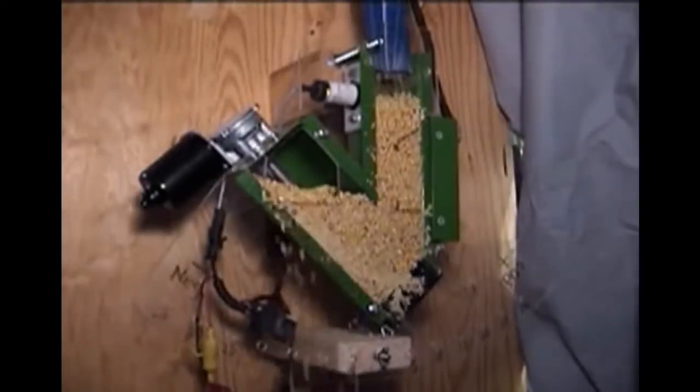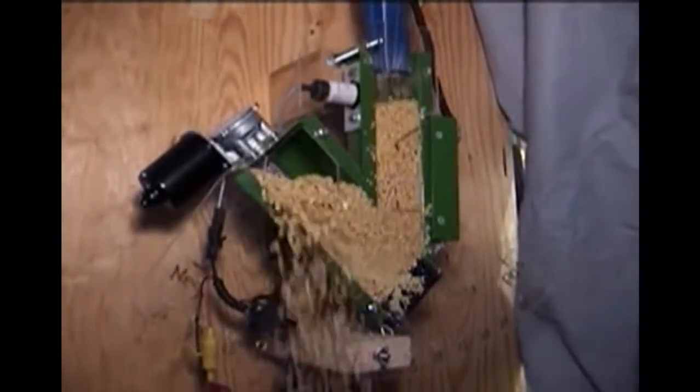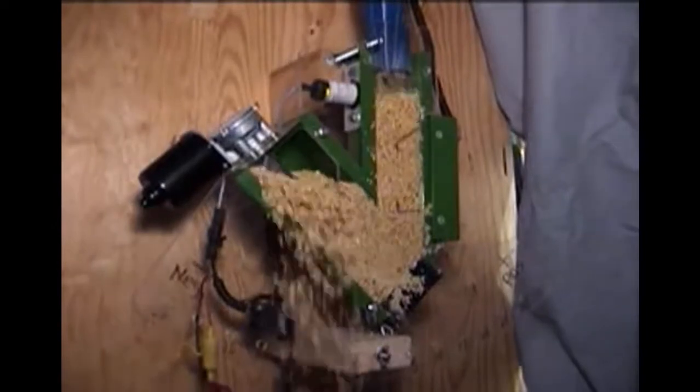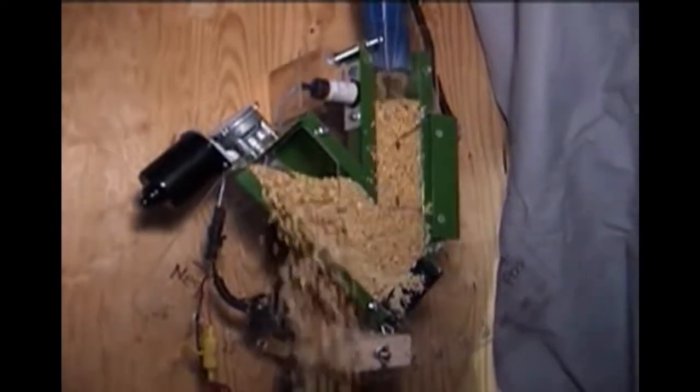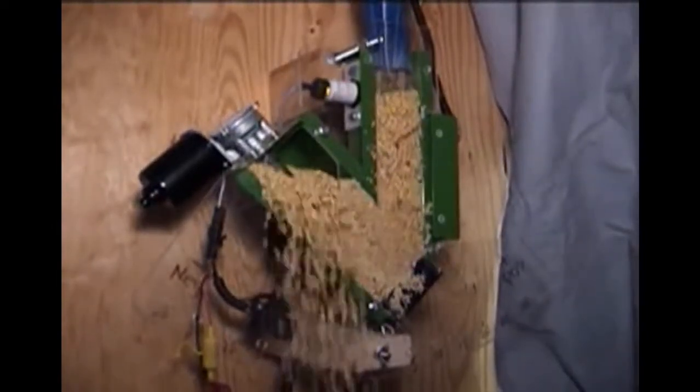Properly adjusting the proximity switch allows grain to be cycled through the EMU incrementally, which results in accurate, up-to-date moisture readings as you are harvesting.